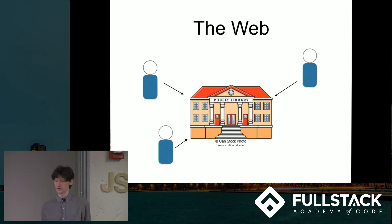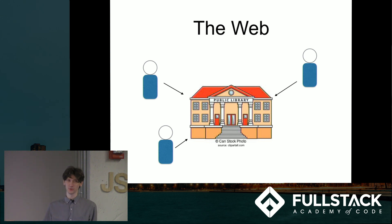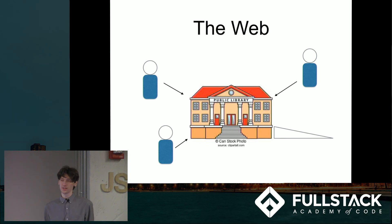However, do you see a problem in this image? If you can't get upstairs, you're probably gonna have a little bit of trouble getting into the library, unless you have an odd access ramp. Web accessibility is basically building access ramps to the web and making sure that everyone can access everything on the web equally and on the same level.